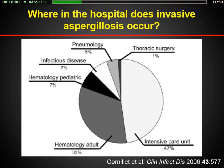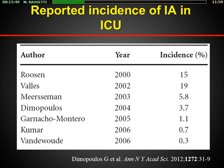Looking at the data from the literature, this is a very old paper by Cornillier, but they clearly demonstrated that the majority of aspergillosis cases are not in hematological departments. More than 50% of reported cases were in the ICU. The reported incidence of invasive aspergillosis in the ICU is quite variable across publications — a nice review by George Dimopoulos highlights data especially from Belgium in the early 2000s, showing very high incidence around 6%.